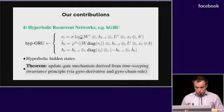Last contribution is to generalize the recurrent network and especially gated recurrent units, such that hyperbolic hidden states line the hyperbolic geometry and respect this hyperbolic geometry. We do this in a principled manner by generalizing the update gate mechanism via a principle which is called the time-reparametrization invariance principle. We use this by generalizing the chain rule to the gyrovector spaces.